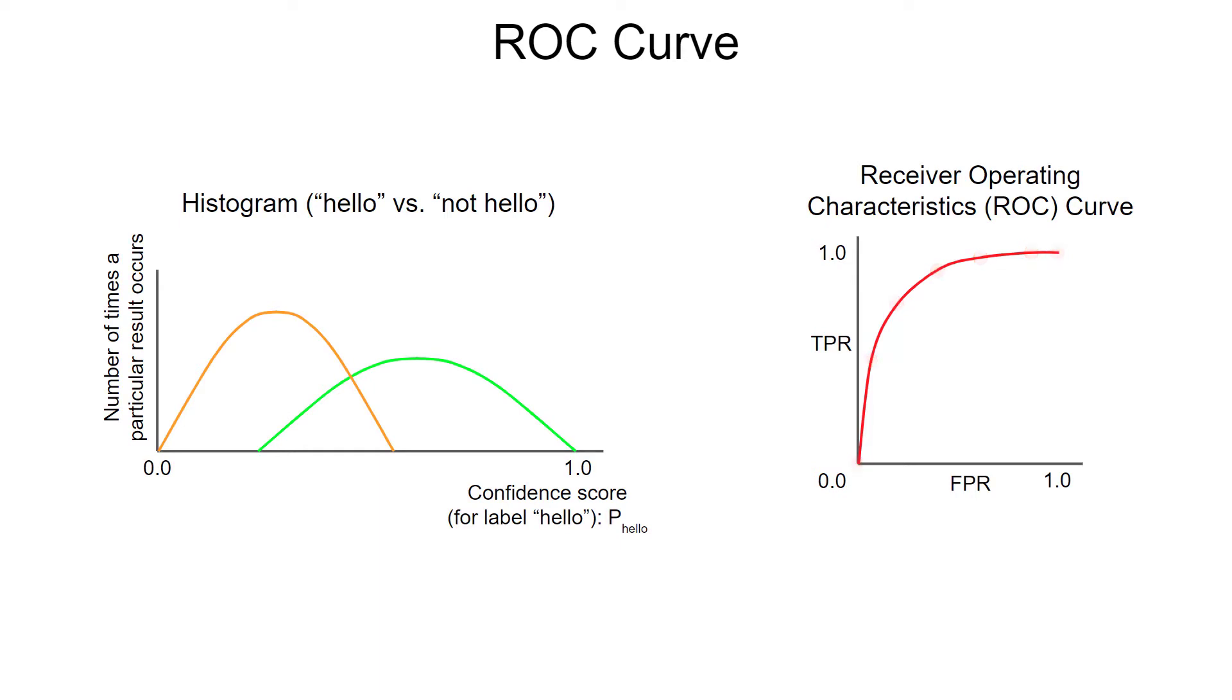You can calculate the area under the ROC curve to get a single number between 0 and 1 that gives you a simple quality score for your classifier. A perfect classifier would have an ROC curve that looks like this, and the area under the curve would come out to be 1. This means there is perfect separation between the classes, and you can find a threshold that gives all true positives without any false positives.